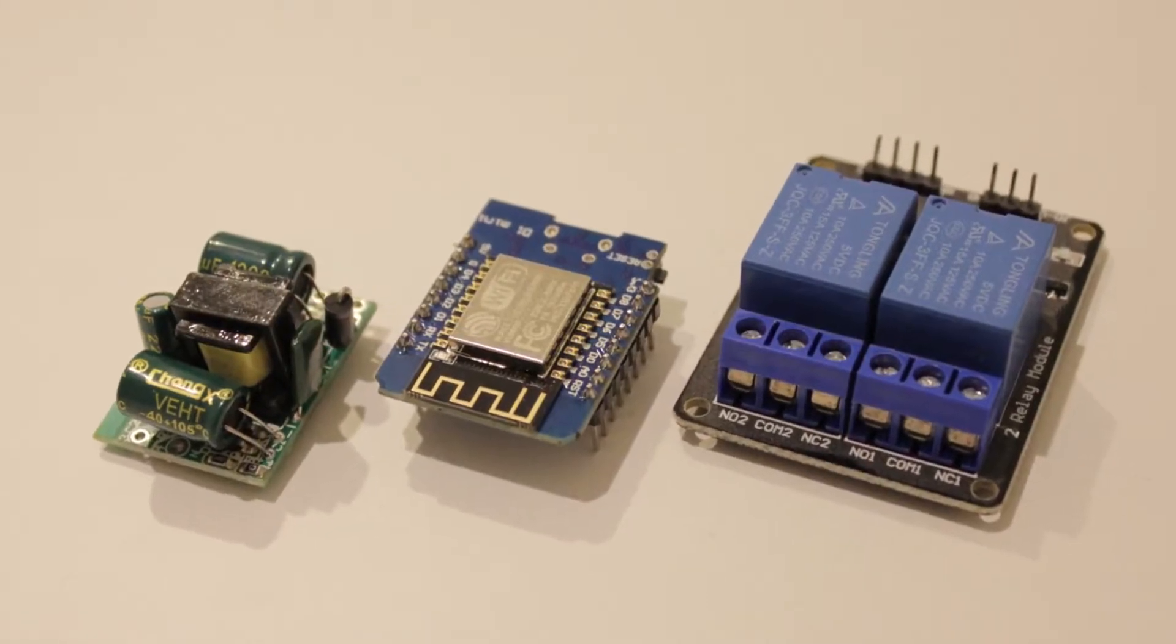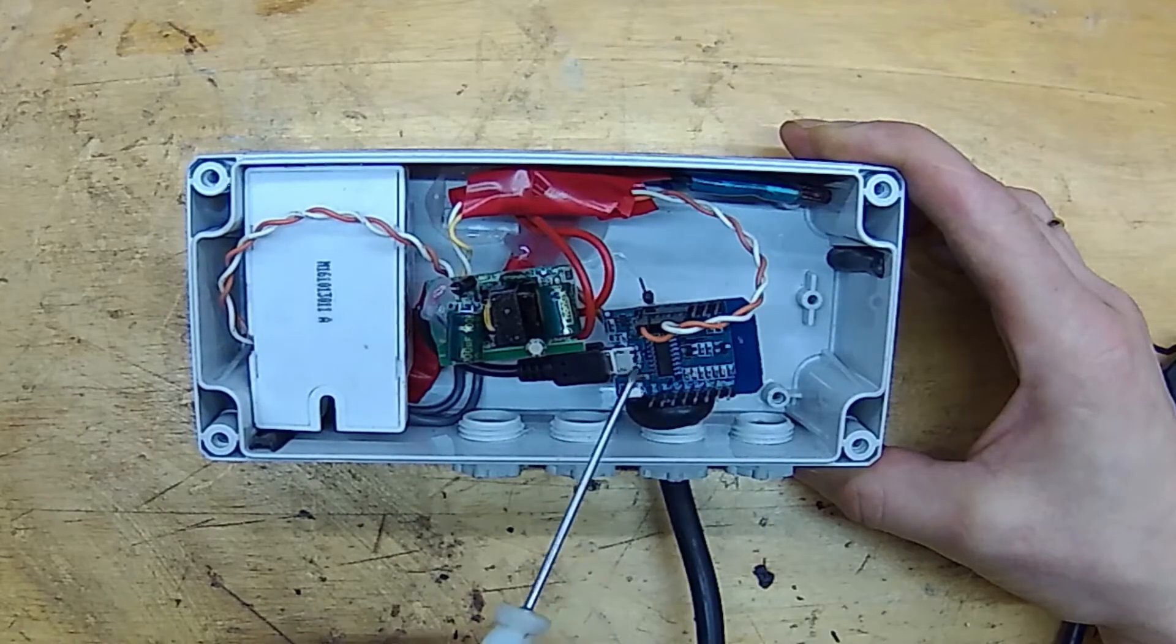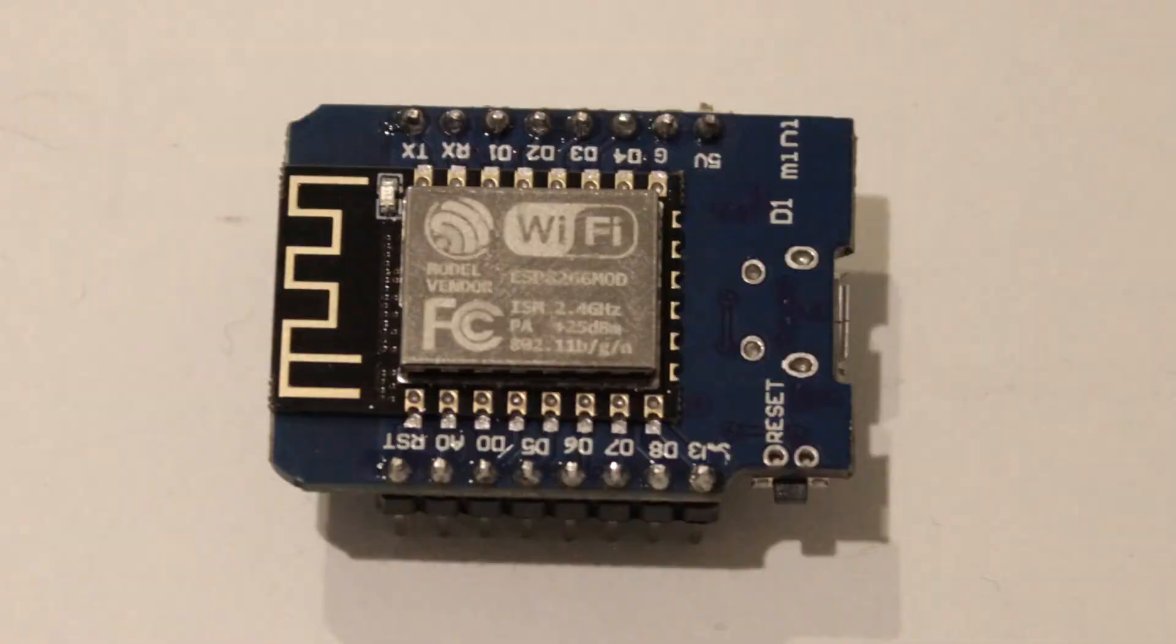First, let's do some wiring. I will be using these components for my build. A Wemos D1 Mini ESP board. This is a very cheap and very practical way of adding an ESP Wi-Fi chip to your network.